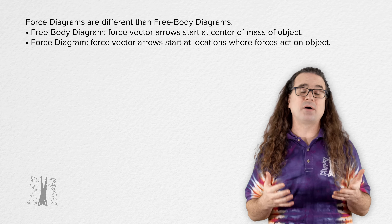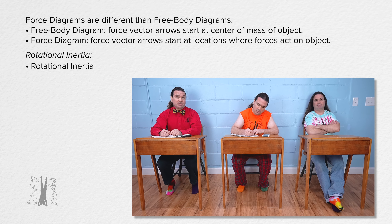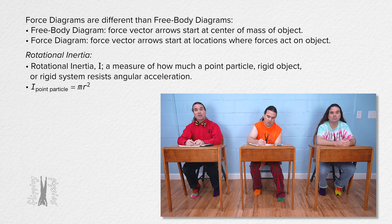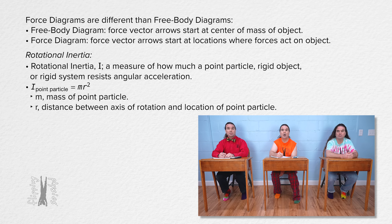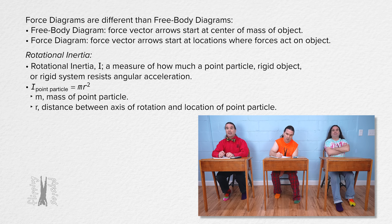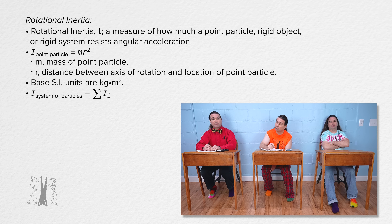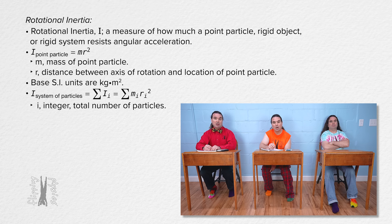Billy, tell me everything you know about rotational inertia. Rotational inertia, for which the symbol is uppercase I, is a measure of how much a point particle, rigid object, or rigid system resists angular acceleration. The rotational inertia of a point particle around an axis of rotation equals mr-squared, where m is the mass of the point particle and r is the distance between the axis of rotation and the location of the point particle. The base SI units for rotational inertia are kilograms times meters squared. For a system of particles, the rotational inertia equals the sum of the individual rotational inertias — sigma of m-sub-i times r-sub-i squared.